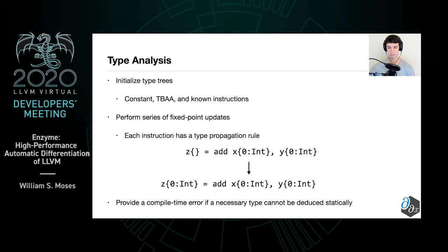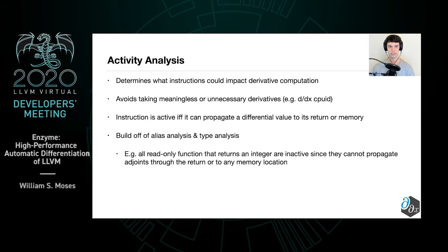We also implement a standard utility inside of the AD world known as activity analysis. This analysis determines what instructions could potentially impact the derivative computation, allowing us to avoid taking meaningless or unnecessary derivatives. For example, what really is the derivative of the CPUID function? An instruction is defined to be active if and only if it can propagate a differentiable value to its return or to some other location in memory. By building off LLVM's alias analysis as well as our new type analysis, we're able to do a much more efficient job of activity analysis. For example, if a function is read-only and only returns an integer, all such function calls are inactive.